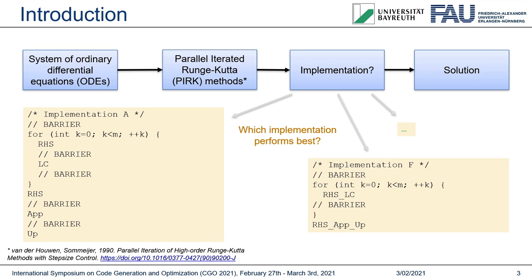This was done here for implementation F. Here we only need two kernels: RHS-LC and RHS-APP. Further, one could also try to only fuse some kernels, for instance only fuse RHS and LC, which leads to more implementations. The vast majority of implementations, however, depends on how we actually implement our kernels.